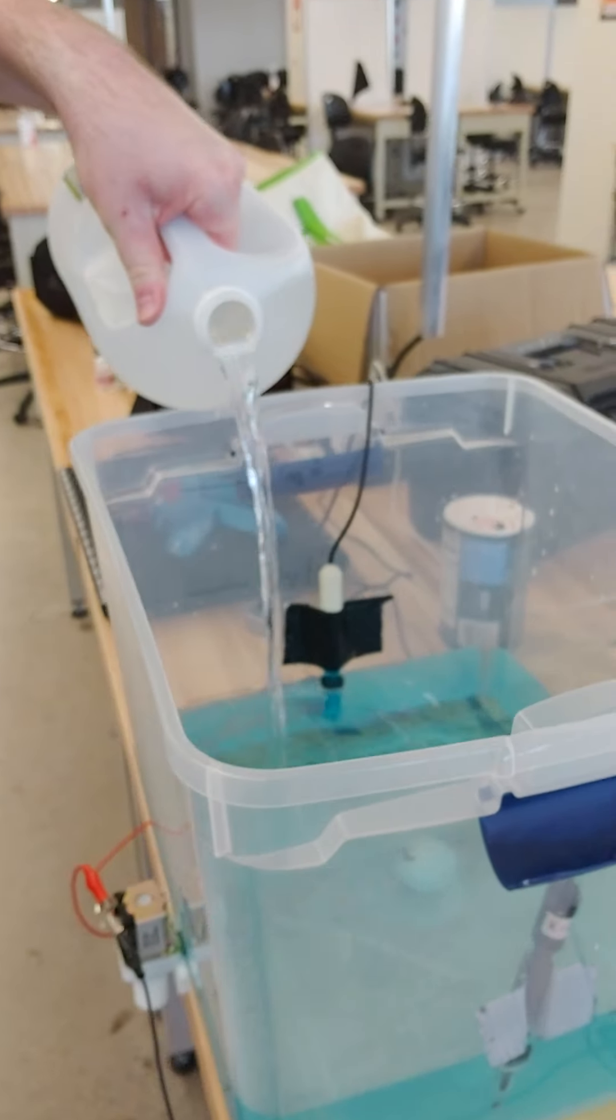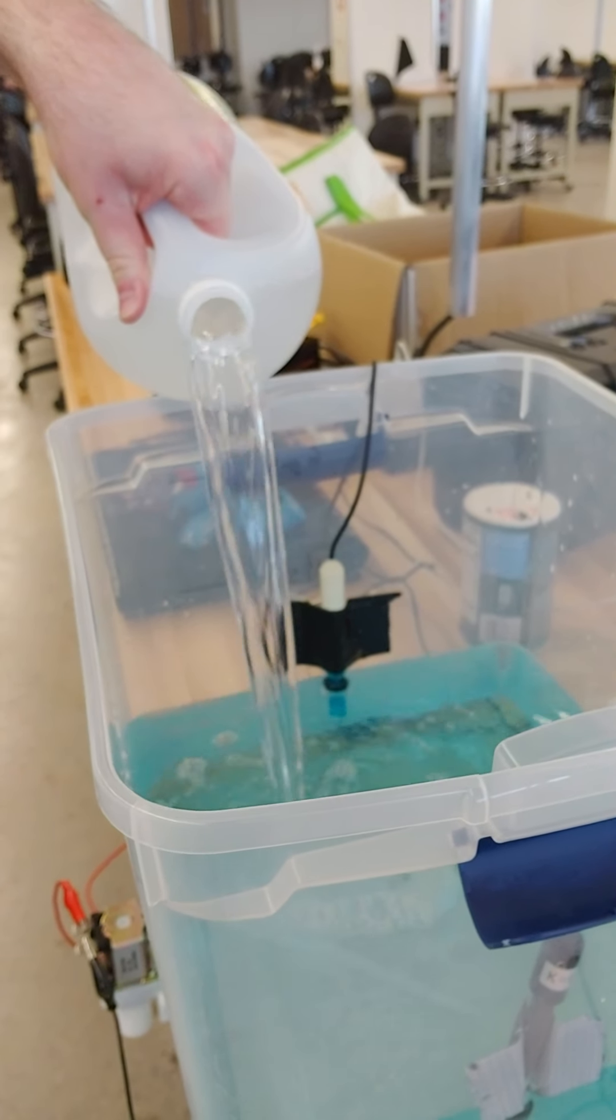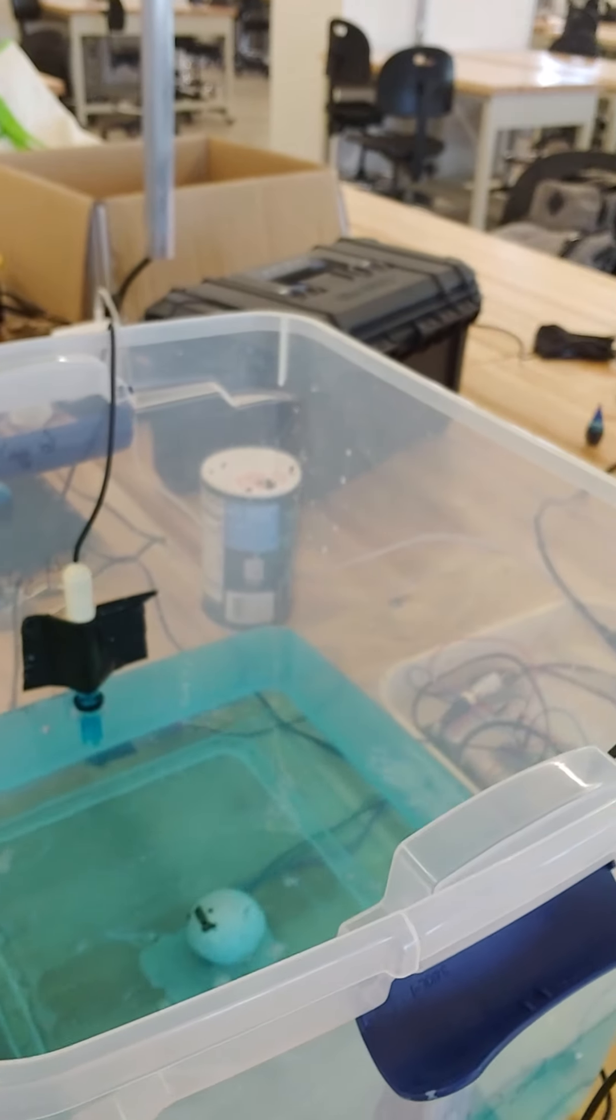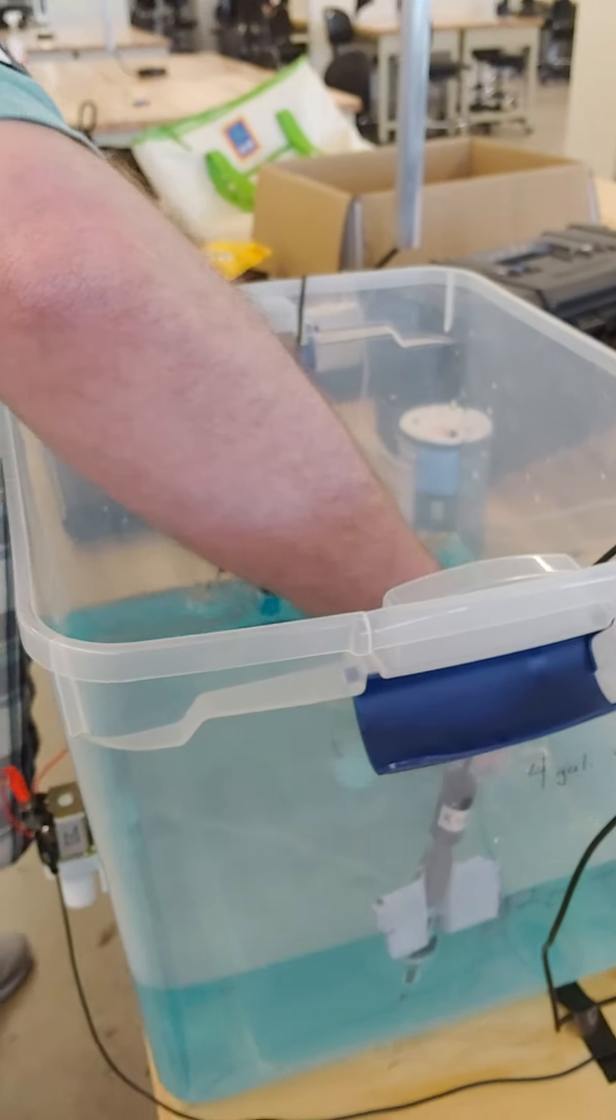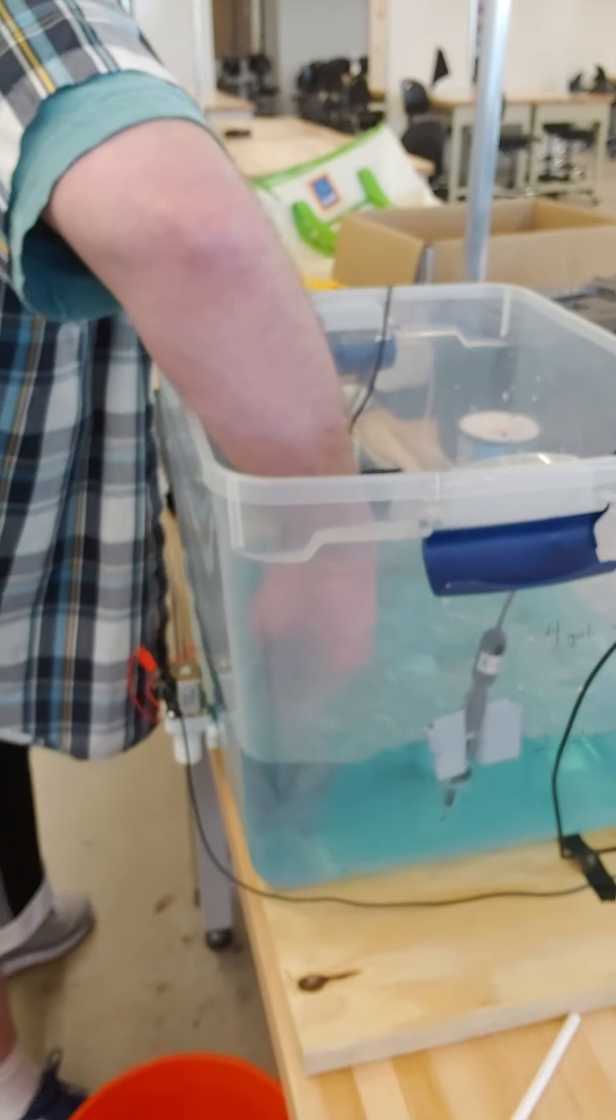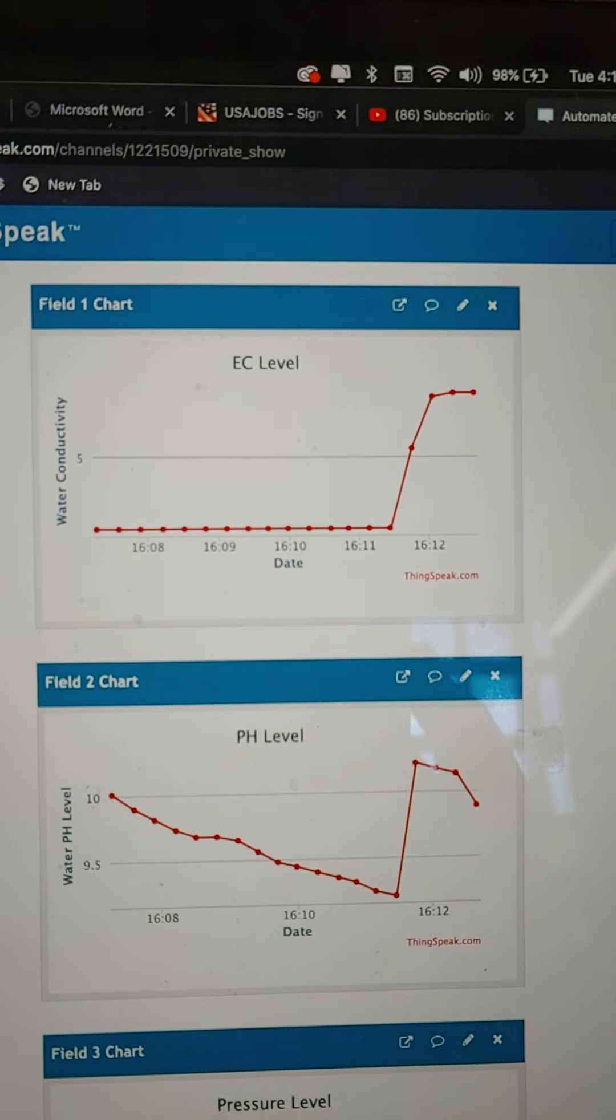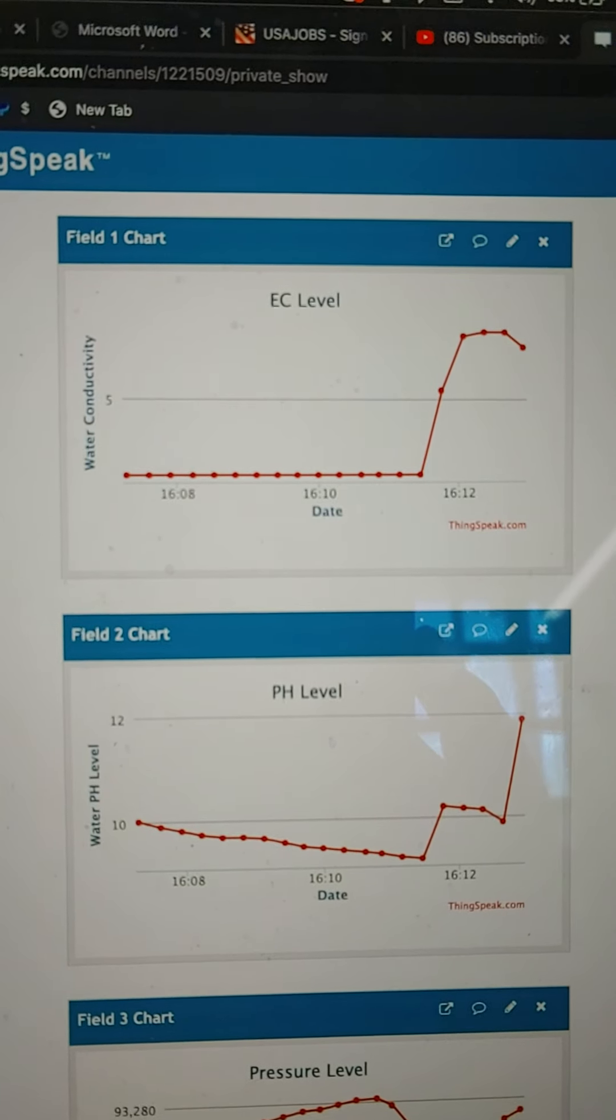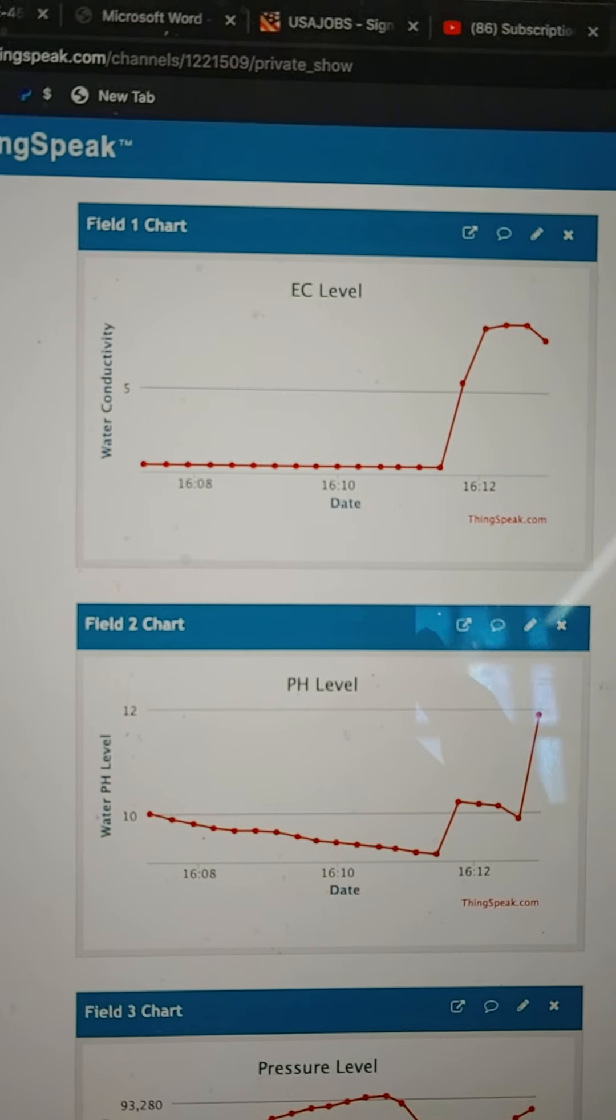Just dump a good amount. Now mix it with a straw, get a good mix. And in a second here you should see the pH shoot up. And there it is. pH level shoots up because we added vinegar, an acidic based solution.